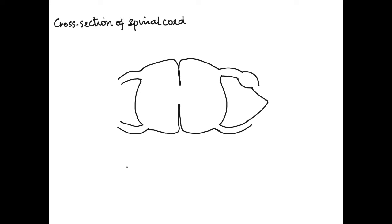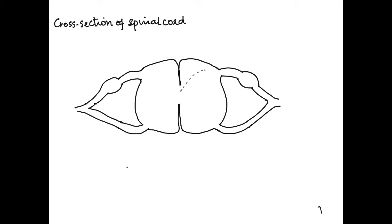Now we extend the dorsal root to form a swelling — that is the dorsal root ganglia — and then join both the dorsal and the ventral roots. We do this on both sides. The dorsal and ventral roots join to form the spinal nerve.